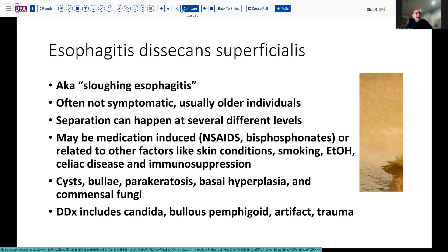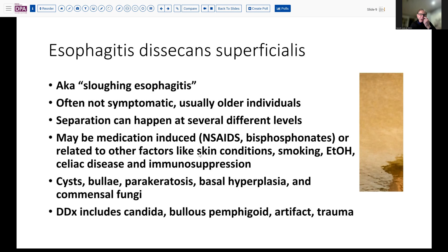Sometimes this is not even symptomatic in these patients, and it may be more like our patient who was endoscoped for other reasons not specifically referable to the esophagus. Usually these are older, more mature individuals. It's been described that this separation within the squamous epithelium can happen at several different levels. There's a variety of possible triggers for this, and none are definitively assigned in terms of pathogenesis because it's somewhat variable. Whatever can cause some disruption of the tight junctions within the squamous mucosa is probably capable of causing it. Sometimes it begins with these little cystic spaces or bullae with some degree of perikeratosis, some reactive basal hyperplasia, and sometimes there may be yeast forms associated with this either in a commensal or coincidental manner.